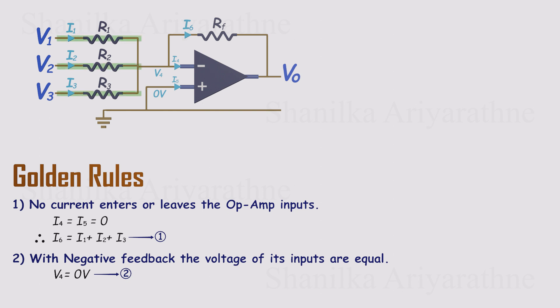I1, I2, and I3 flow through R1, R2, and R3 respectively. By Ohm's law, each current is the voltage across its resistor divided by that resistor.